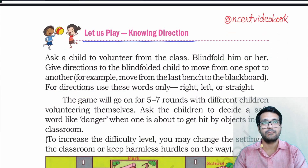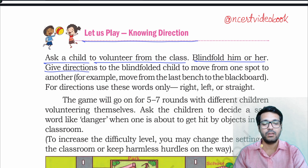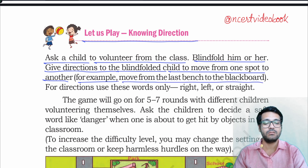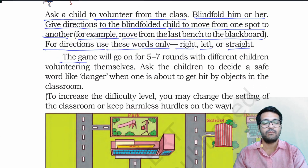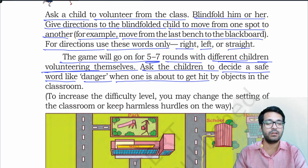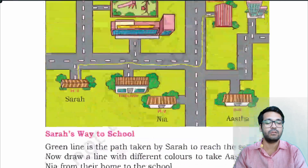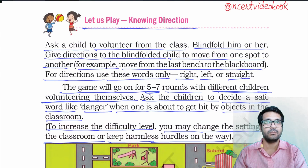Let us play: Knowing Directions. Ask a child to volunteer from the class — blindfold him or her. Give directions to the blindfolded child to move from one spot to another. For example, move from the last bench to the blackboard. For direction, use the words: right, left, straight. The game goes on for 5 to 7 rounds with different children volunteering. Ask children to decide a safe word like 'danger' when one is about to get hit by objects. To increase difficulty, you may change the classroom setting or keep harmless hurdles on the way. This should be done under the supervision of a teacher.